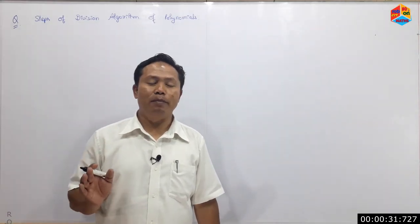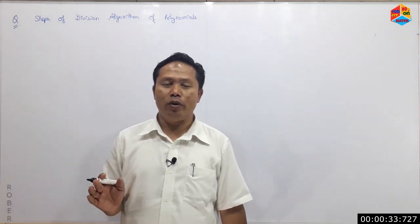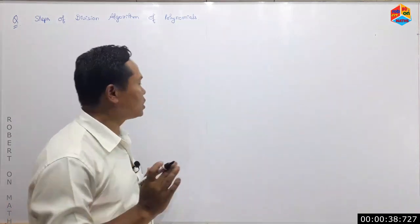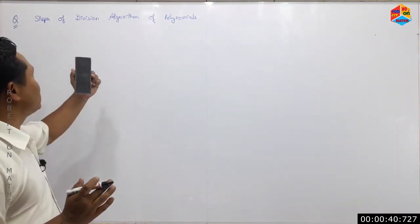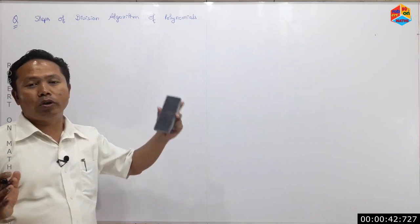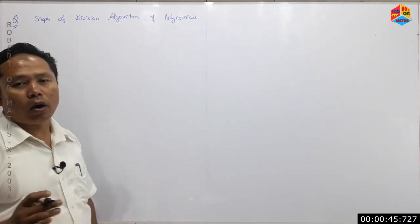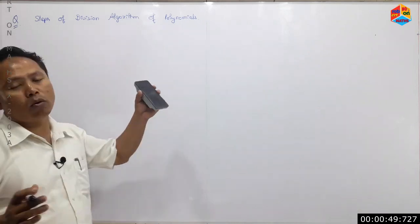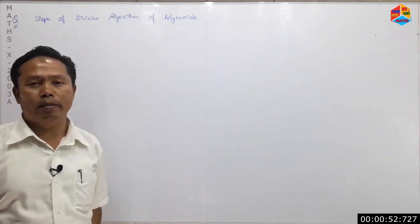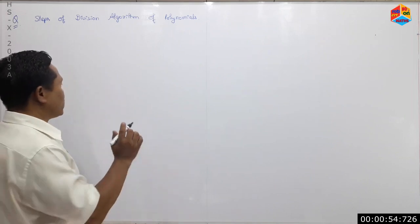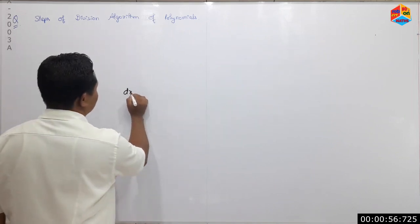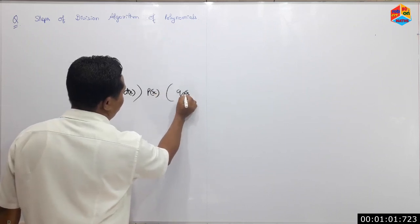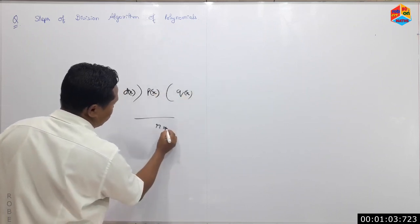We have a problem with this problem. The question is about the division algorithm of polynomials. We have to do the division algorithm, or Euclidean lemma, for polynomials. We have to do the division: the dividend p(x) divided by the divisor q(x), giving quotient r(x) and remainder.